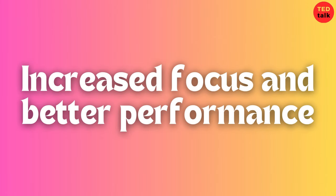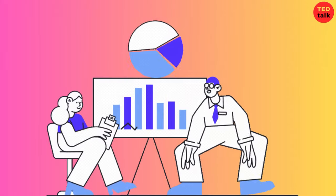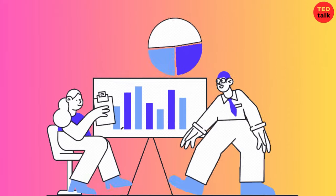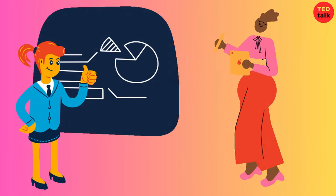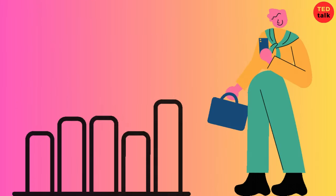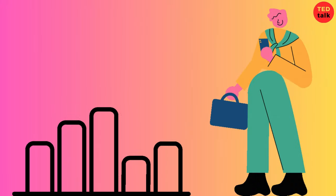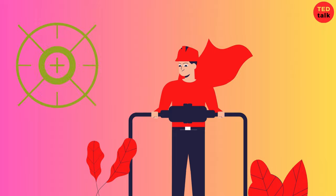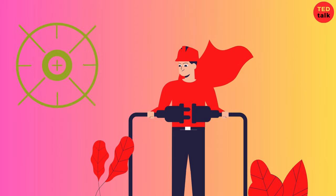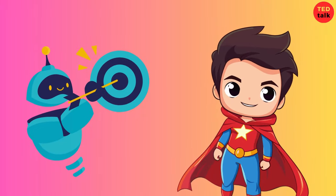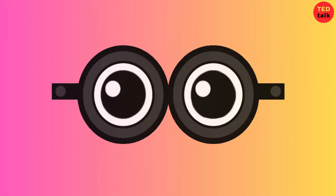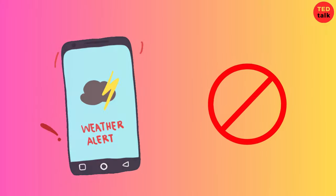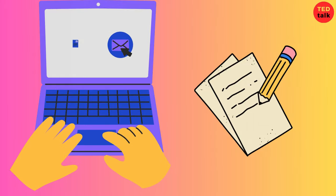Number one, increased focus and better performance. In our busy lives, it's easy to feel pulled in a million directions. But what if I told you that being a little indifferent could actually help you focus better and do your best? When you're indifferent, you're not wasting your energy on things that don't matter much. It's like having a superpower that helps you ignore distractions and stay on target. You become like a superhero, zooming in on what's truly important. This intense focus makes it easier to concentrate on your tasks and goals. Instead of getting sidetracked by every little thing, you can stick to what you need to do and get it done faster.